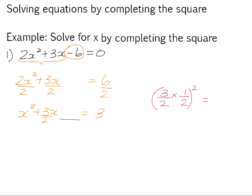If we simplify that, 3 over 2 times a half is 3 over 4 all squared, and 3 over 4 all squared is 9 over 16. So the term that completes the square here is 9 over 16.